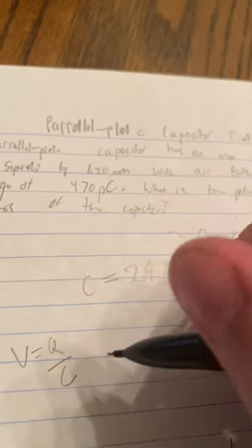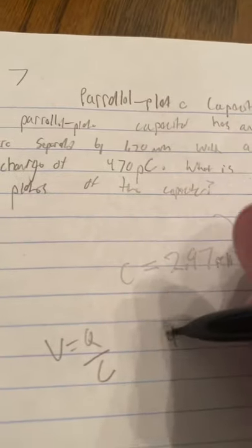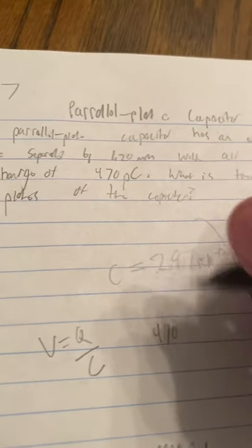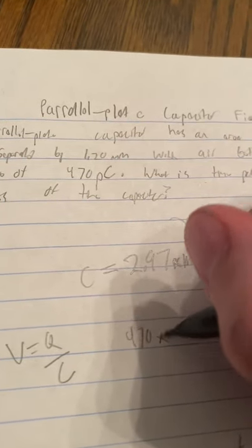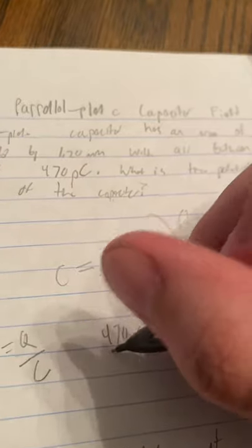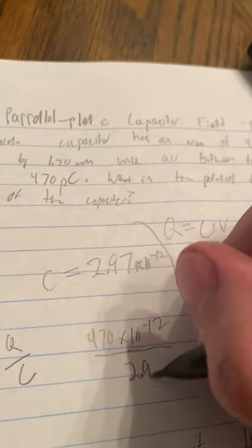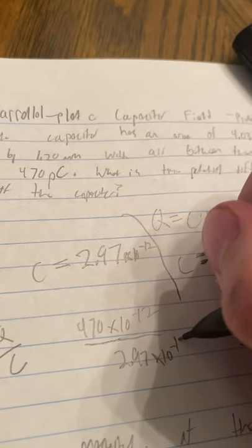Next we're going to use this formula which is q over C. And we got q earlier which was 470 picocoulombs, but we need to convert that to just coulombs, so then we're going to use that e to the negative over what we just got which was 2.97 times 10 to the negative 12.